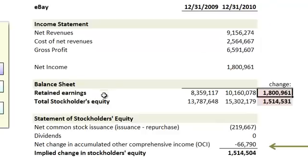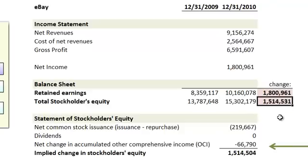Now retained earnings is just a component of total stockholders' equity. What does that look like? Here it is at the end of 2009, growing to $15.3 billion at the end of 2010, for a growth of $1.5 billion. So here we see the role of other comprehensive income. If we come down here to some selected lines from the statement of stockholders' equity, we can see how this works.